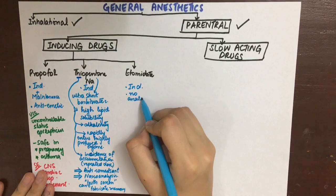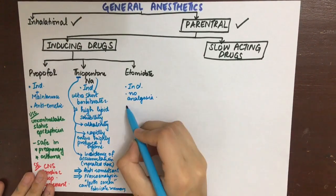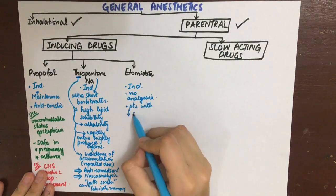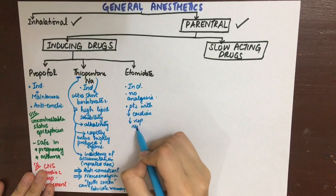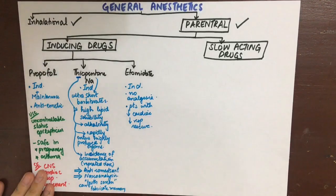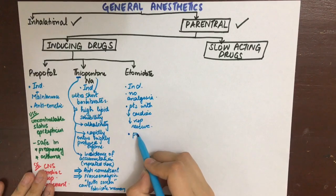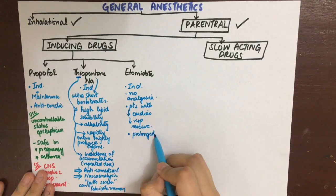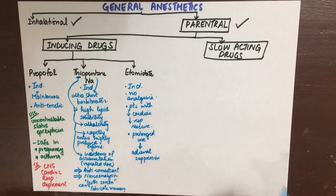The next inducing general anesthetic is etomidate. It does not have analgesic properties and is preferred for patients with low cardiac or respiratory reserve because respiratory and cardiovascular depression is minimal. On prolonged use, adrenal suppression can be seen.